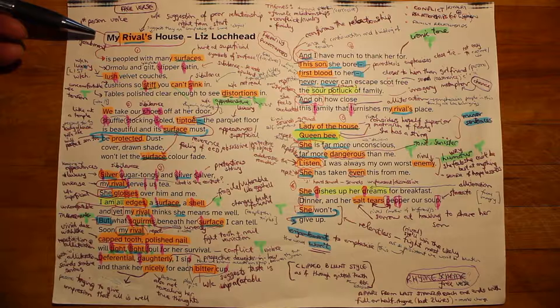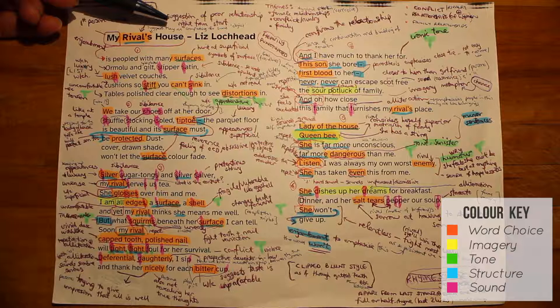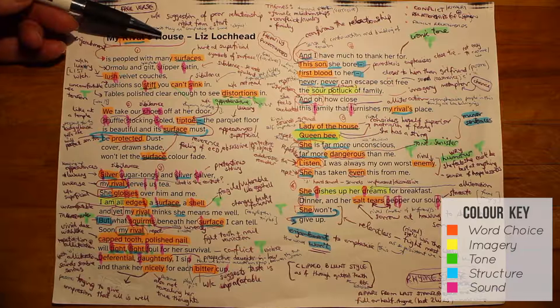The title of the poem, My Rival's House, immediately introduces the first person voice — the persona in the poem — and also the word choice of rival. There's a suggestion straight from the start that two individuals are competing for some object, and it turns out to actually be a person rather than an object. It's immediately suggesting a poor relationship between the two women involved. Also interesting is the enjambment from the title right into the first line of the first stanza, taking us straight into the house mentioned in the title.